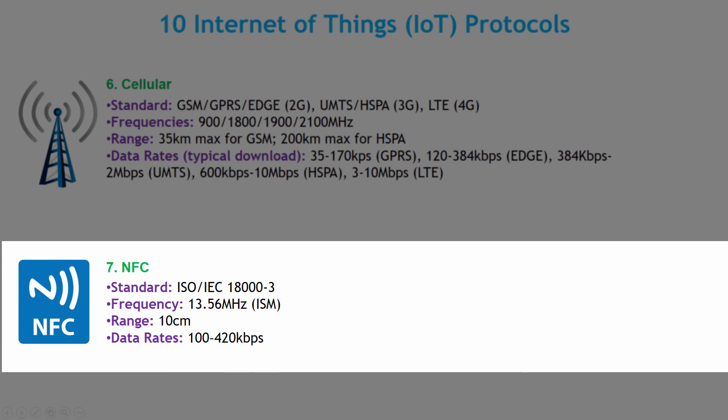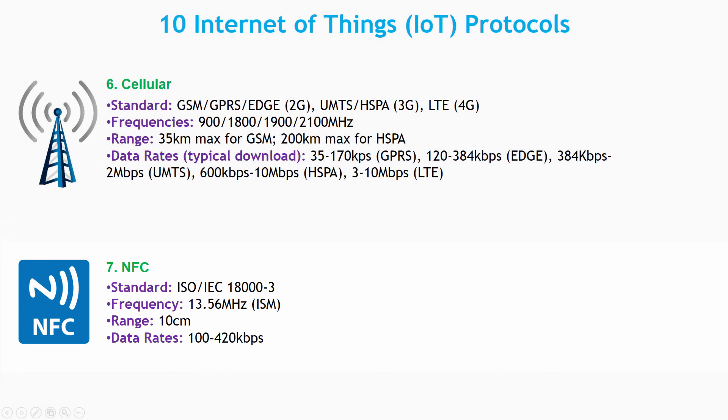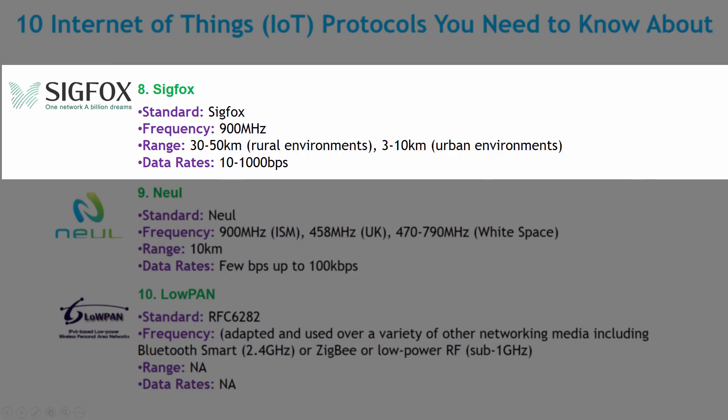The data rate for NFC is around 100 to 420 kbps. Another alternative wide-range technology is SIGFOX, which in terms of range falls between Wi-Fi and cellular. Its range is around 30–50 km in rural areas and 3–10 km in urban environments. It uses ISM bands which are free to use without the need to acquire a license, and it transmits data over a very narrow spectrum. It consumes only 50 mW compared to 5000 mW for cellular communication.